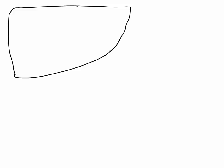Here we can see the anterior or diaphragmatic surface of the liver. Emanating away from this anterior surface is one of the peritoneal ligaments, known as the falciform ligament. Remember, peritoneal ligaments are double layers of peritoneum. This falciform ligament is formed as the peritoneum covering the anterior surface of the liver is reflected away from the liver surface and passes towards the anterior abdominal wall.